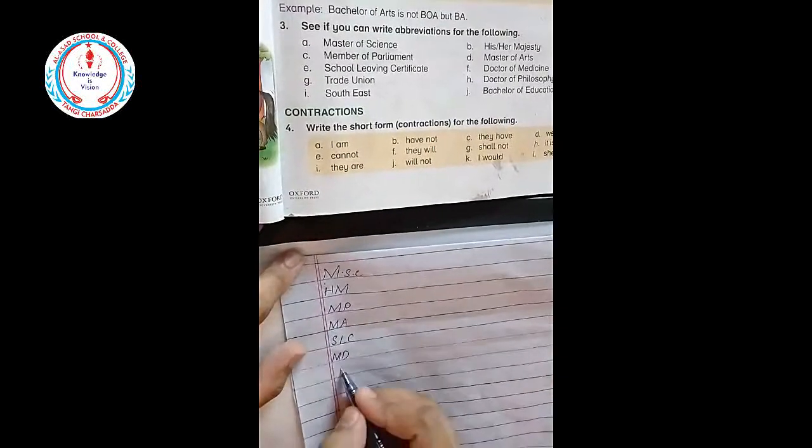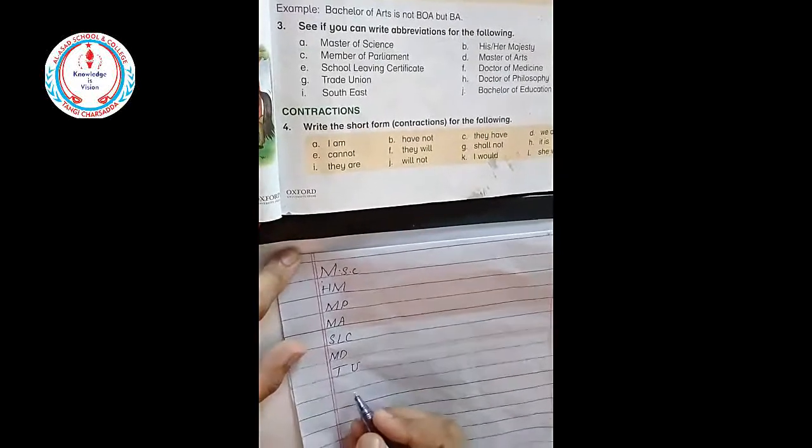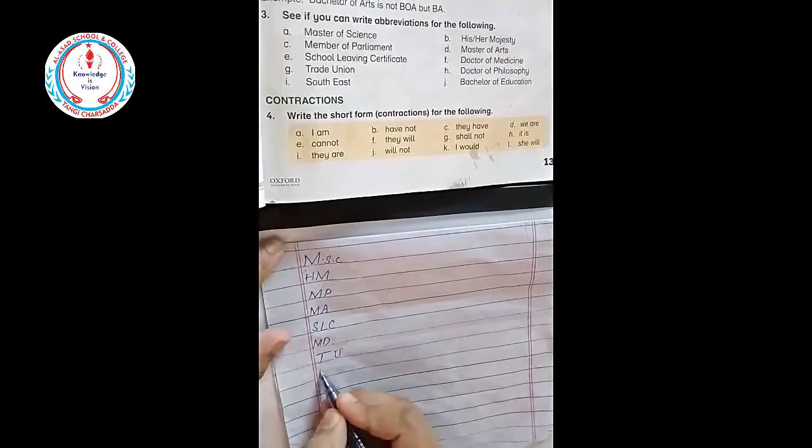Then is Trade Union. For Trade Union we will write TU. Then is Doctor of Philosophy, which is PhD.